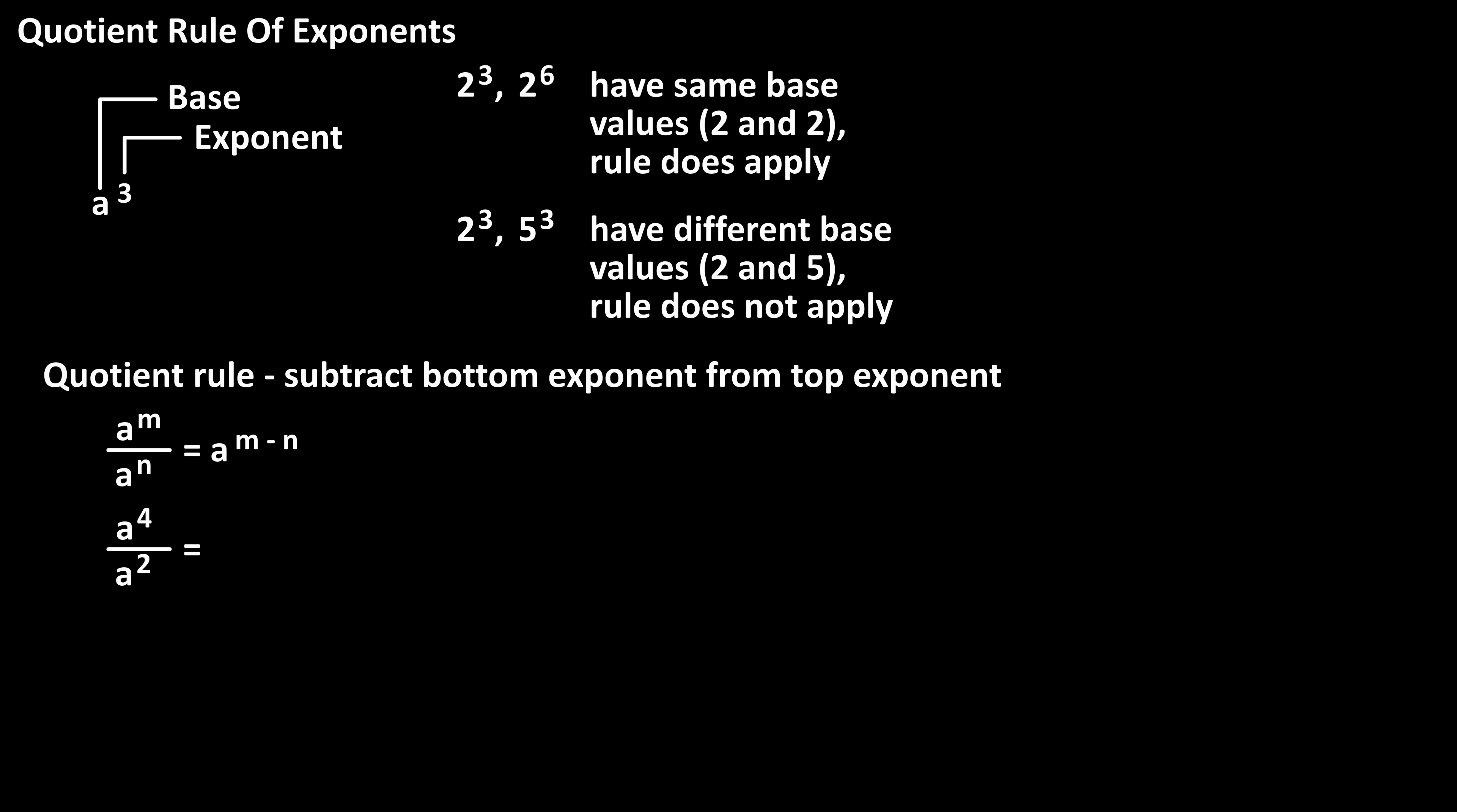For instance, a raised to the 4 divided by a raised to the 2. Using the quotient rule, we subtract the exponent in the bottom from the exponent on top. So 4 minus 2 is 2, and we have a final answer of a raised to the 2. If we write this out,